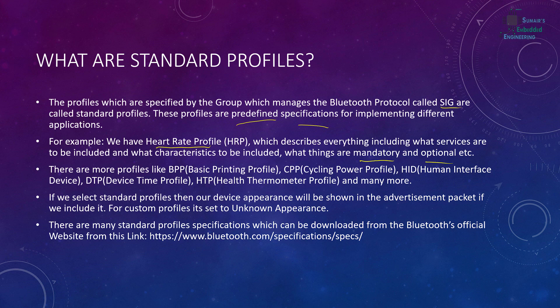These standard profiles can be accessed on the Bluetooth SIG website. There are many profiles like BPP (Basic Printing Profile), CPP (Cycling Power Profile), HID (Human Interface Device Profile), DTP (Device Time Profile), HTP (Health Thermometer Profile), and many more. You can download these specifications and implement all the code according to these standard profiles to make standard applications.